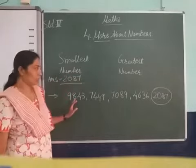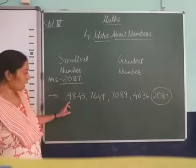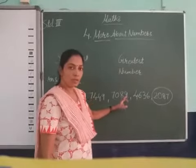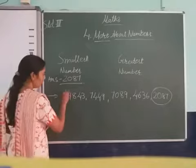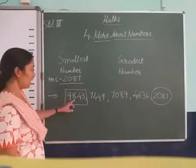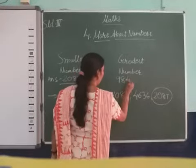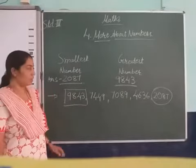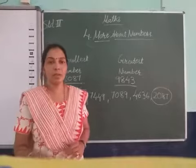And what is the greatest number? 9, 7, 7, 4 — 9 is the greatest. Out of these, we draw a square for the greatest number. 9, 8, 4, 3. Write the answer here: 9, 8, 4, 3 is the greatest number.